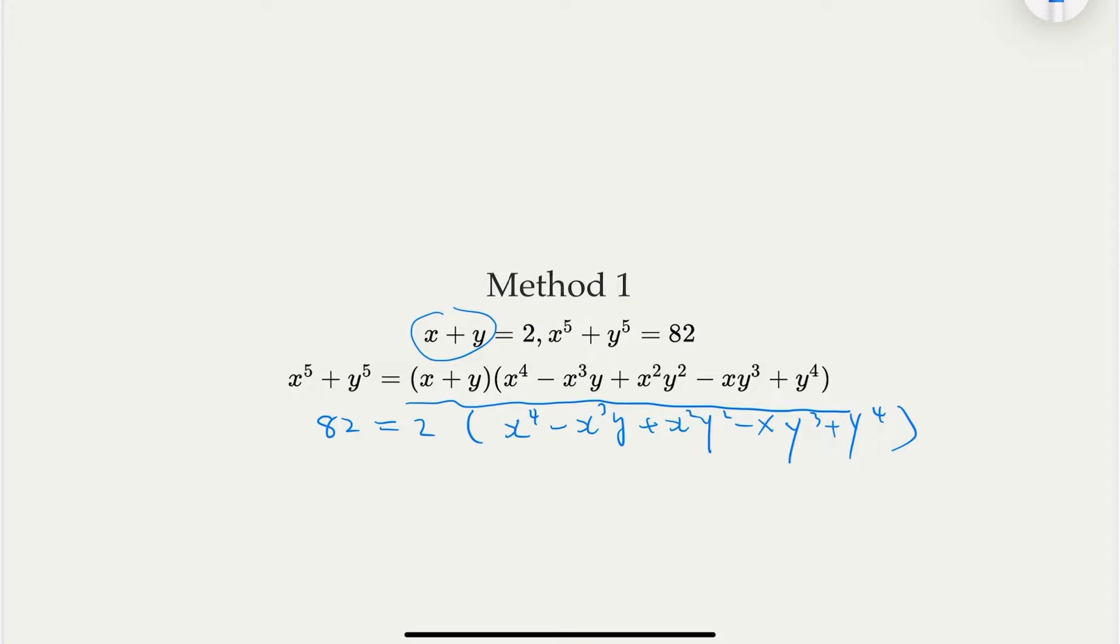But at the end of the day, you may realize by going through this process, you probably know that it is somehow related to the way we derived the Newton's identity for different powers, for the recurrence relationship. So we're not going to continue with this method. We're going to use the Newton's identity as a tool to solve this problem.